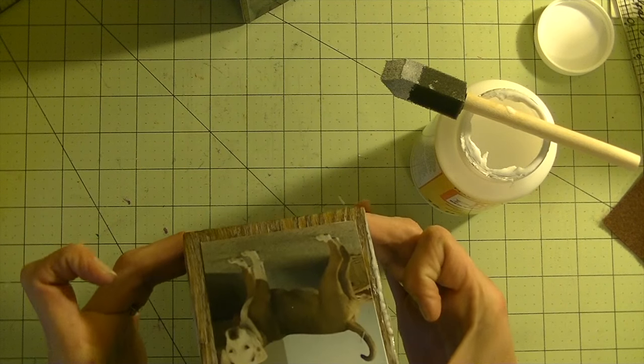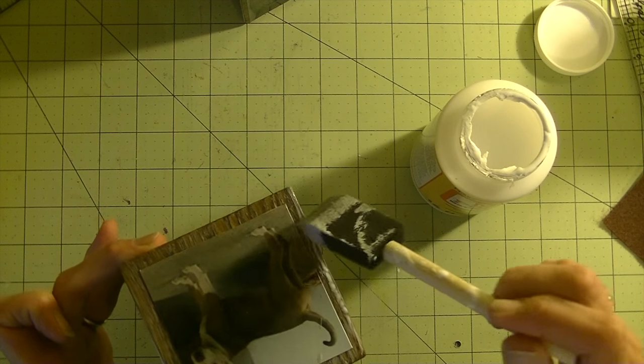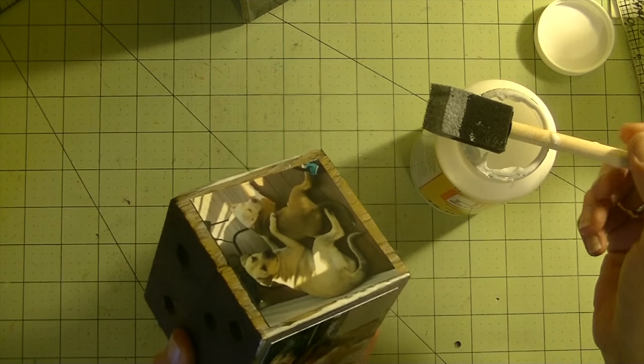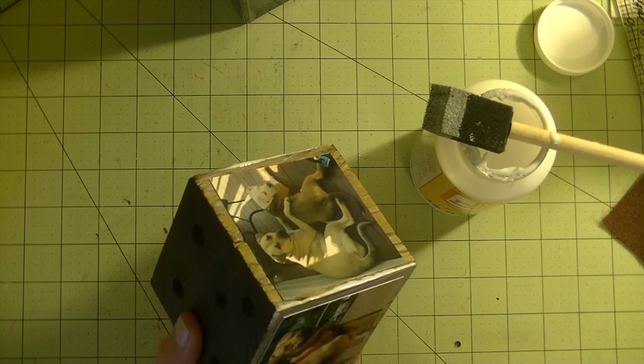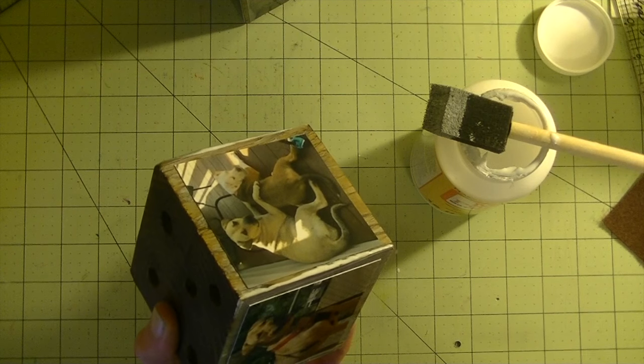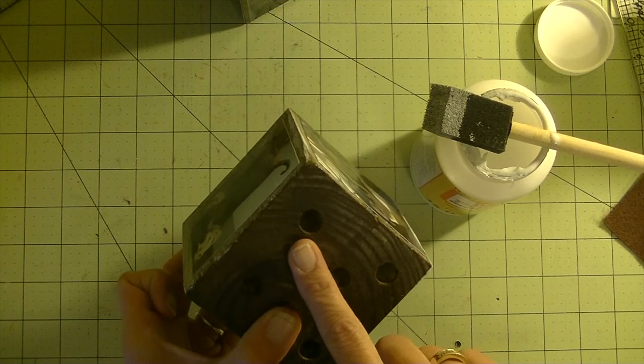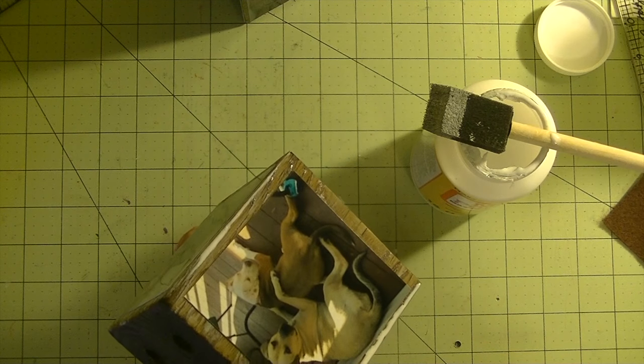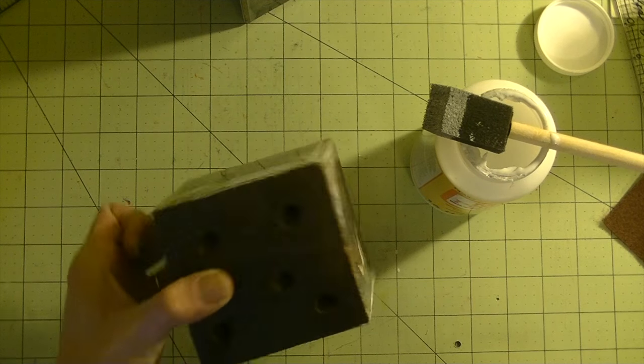Alright, let that sit and set up for a minute. Let your glue dry. When that is done, we're going to go back over it with another coat of Mod Podge. Let that dry and another coat of Mod Podge. So it'll be total one Mod Podge layer on the block and then two on the photo. I'm going to let these dry. We'll come back and finish it off.